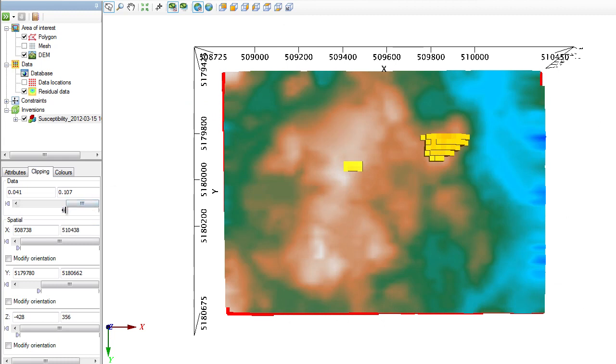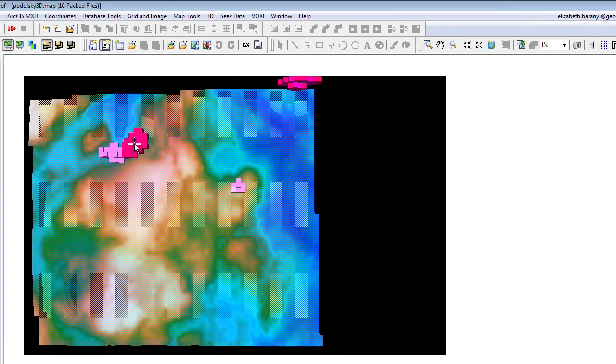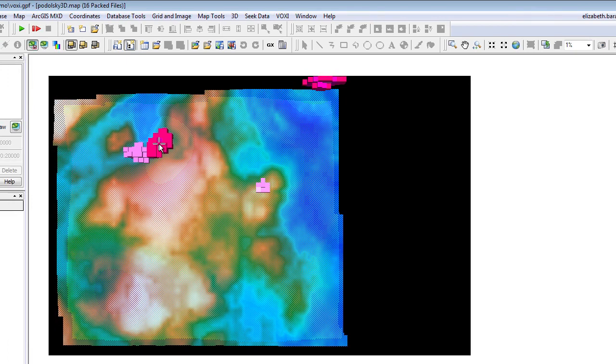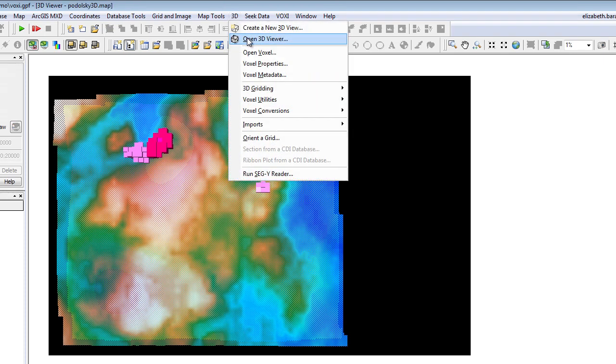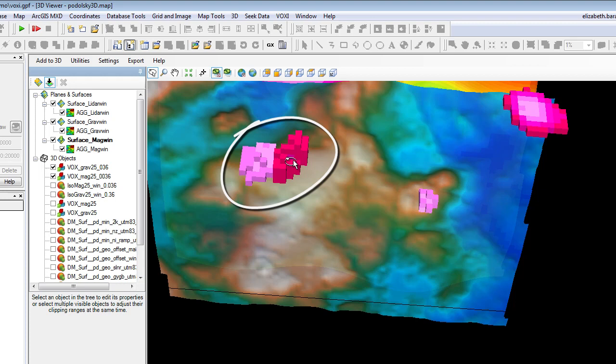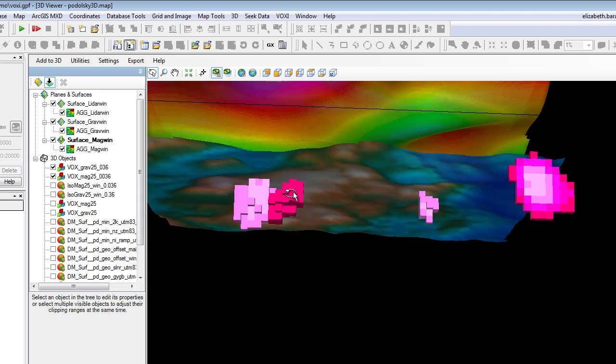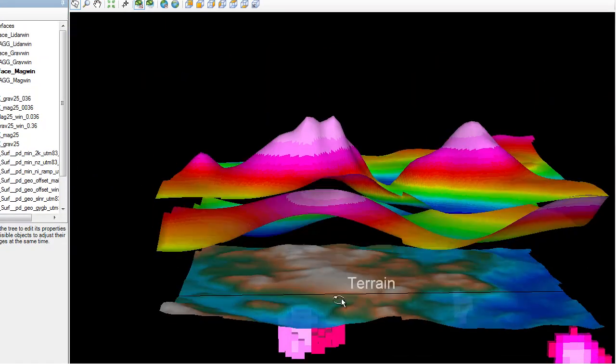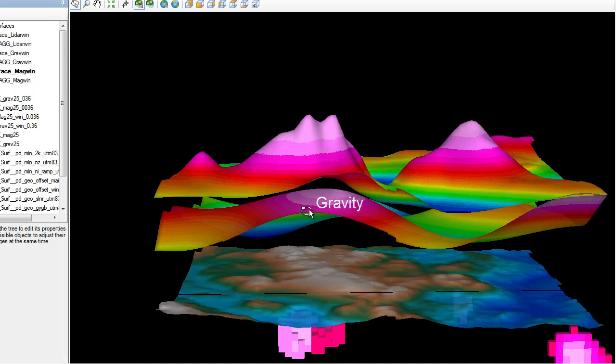In interest of time, I also modeled the gravity data and produced a map that has the gravity and the magnetic inversion results along with other a priori structural information that was made available to us by QuadraFNX. Let me minimize this map and open the 3D map with the results. Once again, here is the area where the high susceptibility shown in a lighter shade of magenta, and the high density shown in the darker shade of magenta are concentrated. What you see on the lower surface is the terrain. The middle relief surface is the gravity data put on its own relief so that you see the highs very clearly. And the surface above is the magnetic data that is also draped on itself.